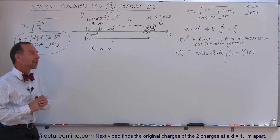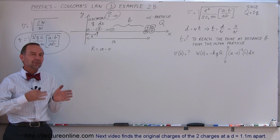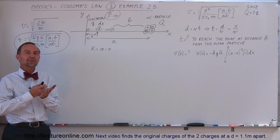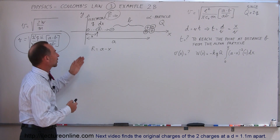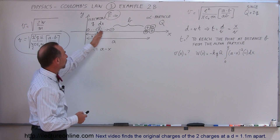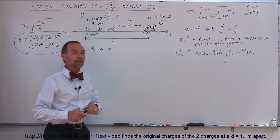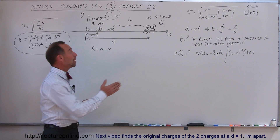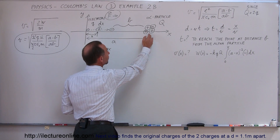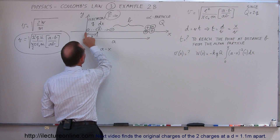Welcome to Electron Online. We're going to do the same problem we did in the previous video, except this time we're trying to find the time that it will take for the electron to move from the origin to a point at a distance b away from the alpha particle. The alpha particle was nailed in place right here on the x-axis, the distance a from the origin.